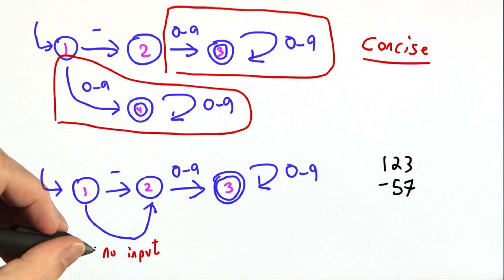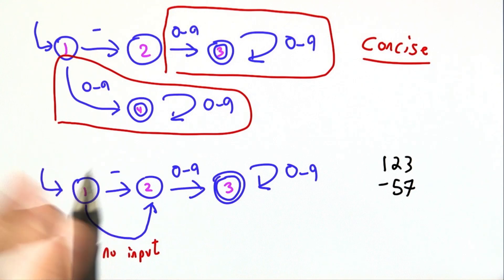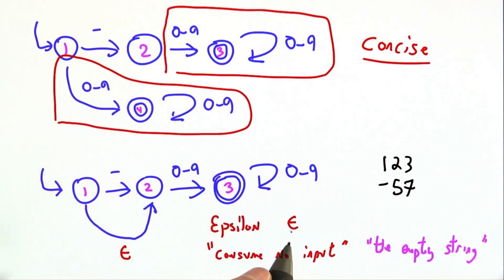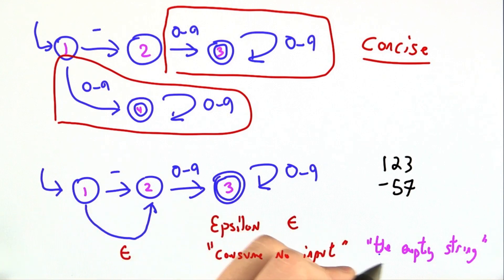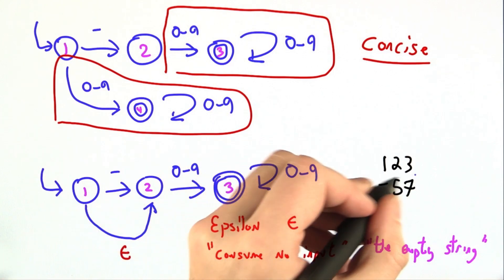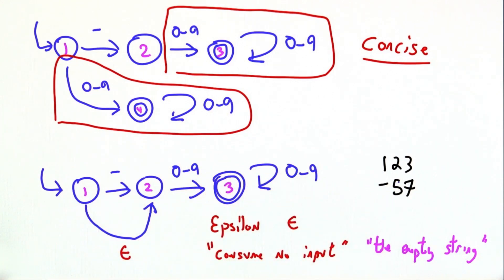We have a particular convention for indicating that an edge accepts no input. We use the Greek letter epsilon. You can either think of epsilon as meaning consume no input when you go across this edge, or you can think of it as referring to the empty string, at which point you can consume the empty string all you want, but since it's of size 0, it doesn't affect what you're trying to recognize.